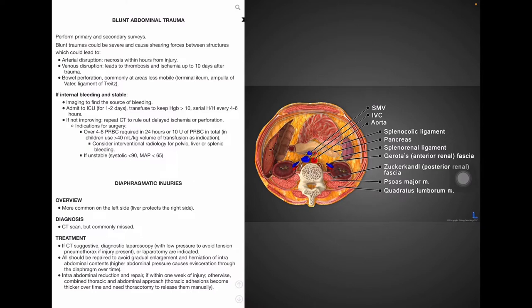Within hours of the injury, necrosis can take place because of arterial disruption. In addition, venous disruption causes thrombosis and ischemia up to 10 days after trauma. We first need to perform a primary survey, including the ABCDEs, which stand for airway, breathing, circulation, disability or neurologic condition, and exposure and environmental control. This will be followed by a secondary survey, which is a more extensive evaluation that includes a head-to-toe evaluation and palpation, complete history and physical, a reassessment of vital signs, and then blood work and imaging.